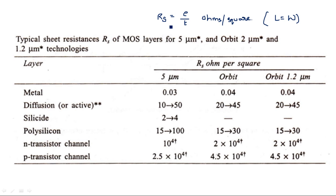We are now going to apply this sheet resistance concept to a MOS transistor to calculate its total on-resistance when it is in the on state. This tabular form gives the sheet resistance of particular layers — metal, diffusion, and others — for different technologies. Technology refers to the channel length: 5 micrometer, 2 micrometer, and 1.2 micrometer.